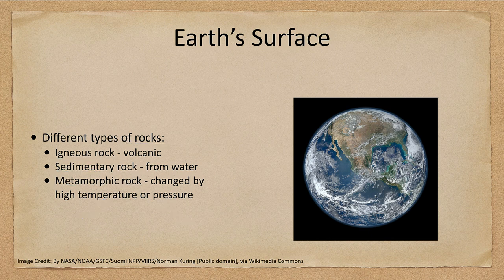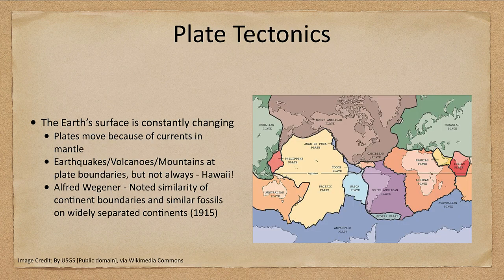Now, what do we see when we look at the surface in a little more detail? We see that the surface is broken up into plates. The surface is constantly changing, and where we see things like earthquakes, volcanoes, and mountains are at the plate boundaries.